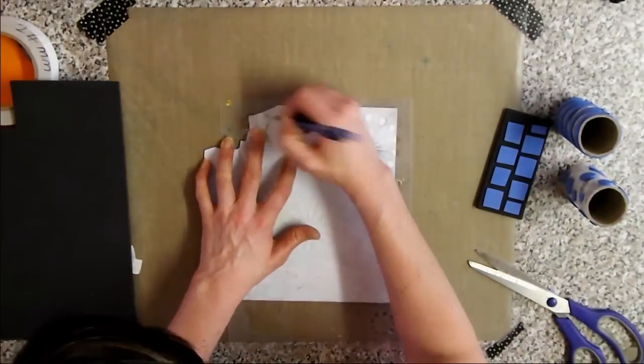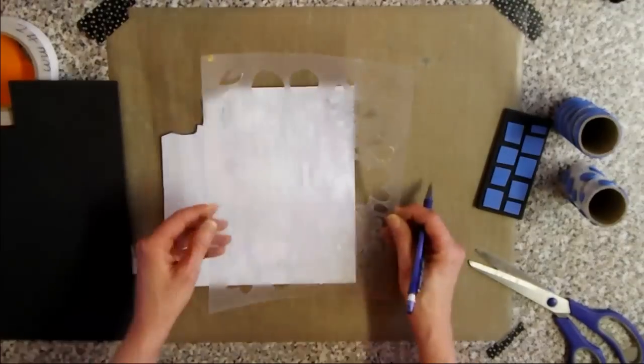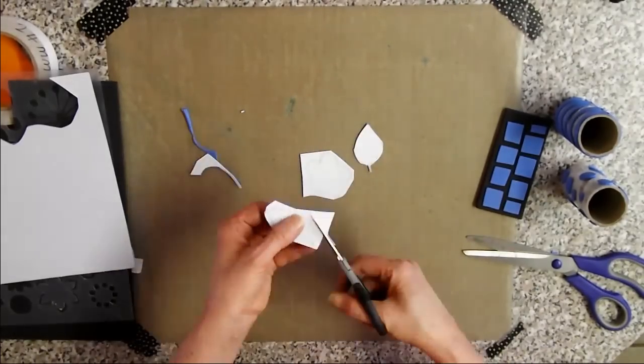Use stencils to draw and cut out images on the back of the peel and stick foam sheets. Draw doodles with a ballpoint pen on your foam images and adhere to the thick foam sheets.